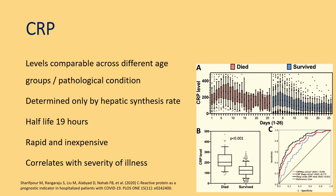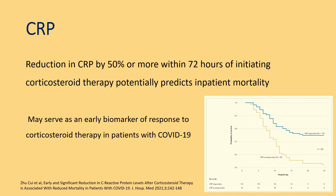CRP is a marker that is consistently elevated in SARS-CoV-2 infection. Levels are comparable across different age groups and pathological conditions. It is rapid, inexpensive, and correlates with severity of illness. A reduction in CRP by 50 percent or more within 72 hours of initiating corticosteroid therapy potentially predicts inpatient mortality, and may serve as an early biomarker of response to corticosteroid therapy in COVID-19 patients.